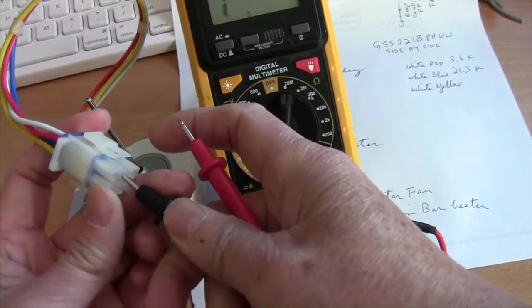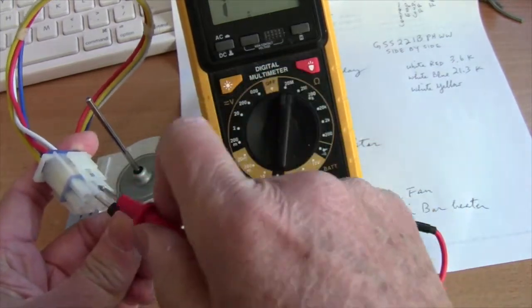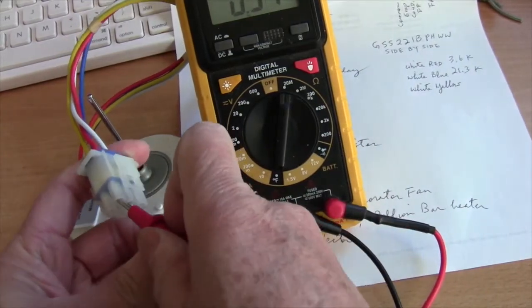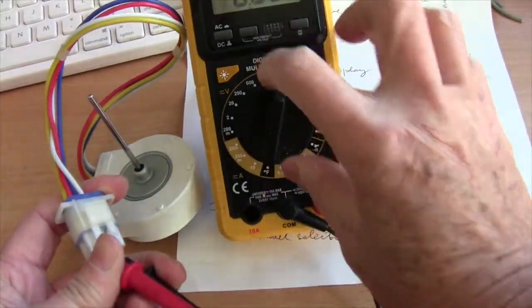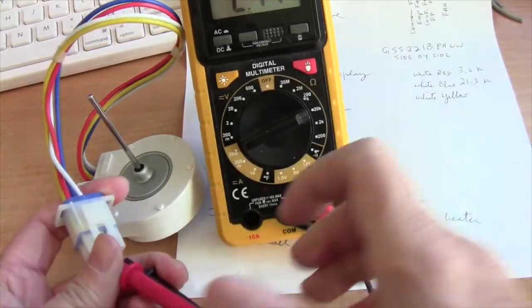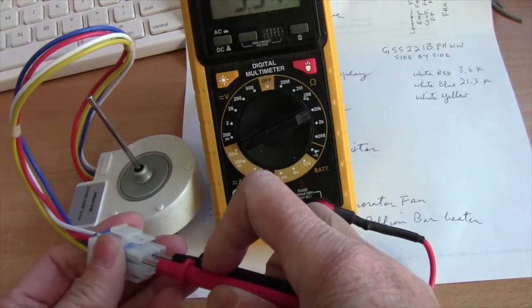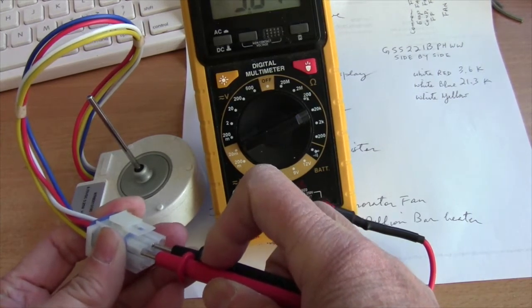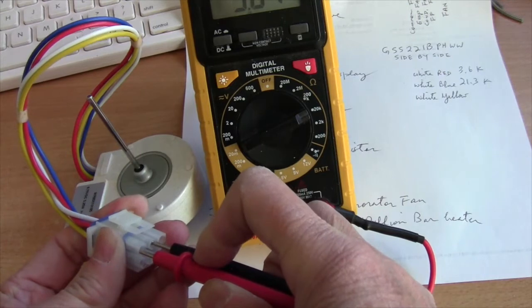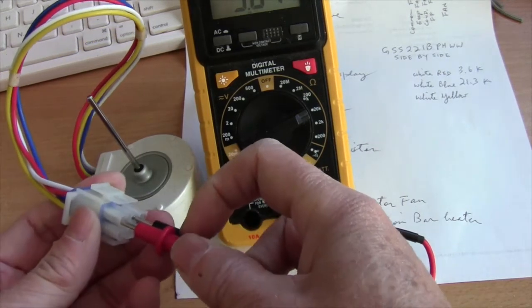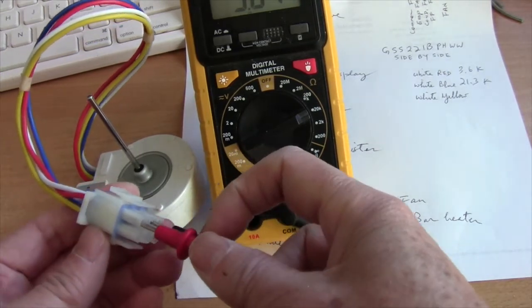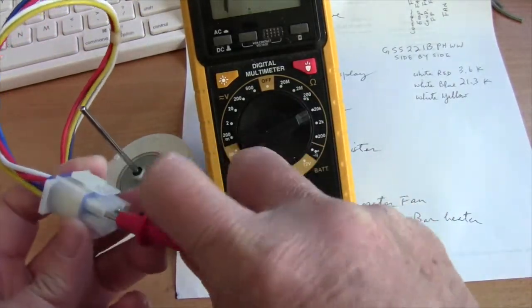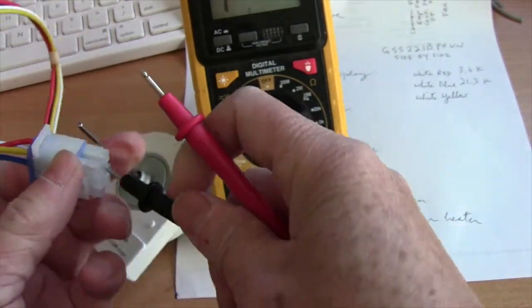And the red wire here is the high speed. So let me just set it. I have done this already, but I'll just show you. So the white and the red wire is about 3.6K. And the lower the resistance, the higher speed the fan will run. So that's the red and the white.